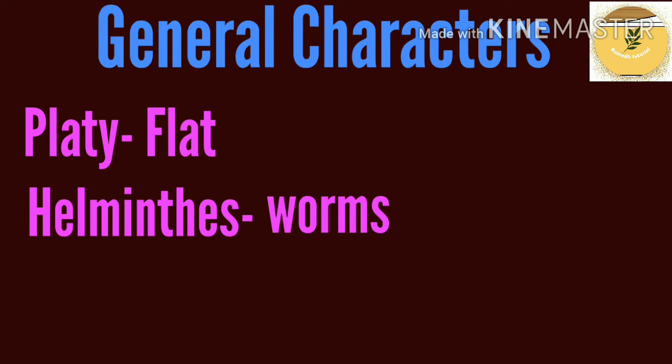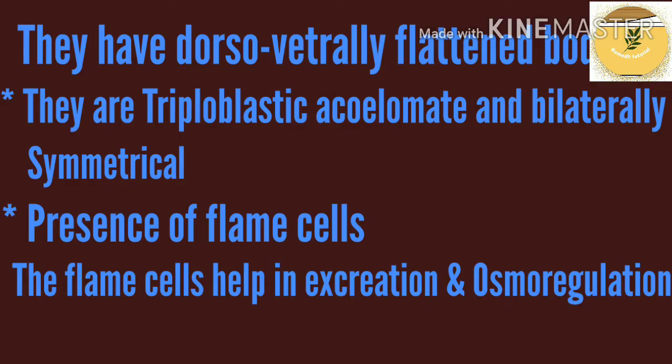Platy means flat, helminth means worms. They have a dorsal-ventrally flattened body. They are triploblastic, acoelomate, and bilaterally symmetrical. Triploblastic means three germ layers are present: outer ectoderm, middle mesoderm, and inner endoderm. Acoelomate means body cavity is absent. Bilaterally symmetrical means the body can be divided into identical left and right halves in only one plane.